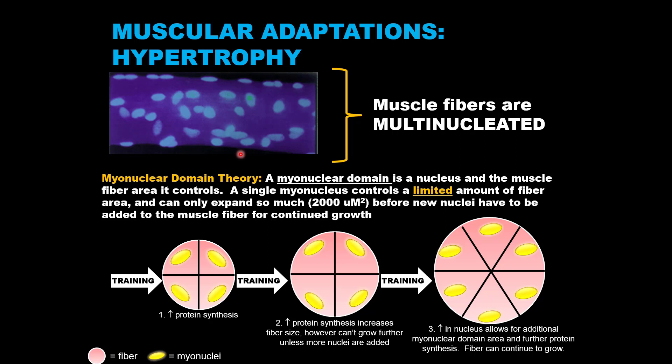One of the reasons muscle fibers are multinucleated is that even at adulthood, new myonuclei can form. Myonucleogenesis as it relates to myofiber hypertrophy operates on the basis of the myonuclear domain theory. A myonuclear domain is a single nucleus of the muscle fiber and the area that it controls. This implies that a single myonucleus can only control a limited area, and the muscle fiber can only expand so much before new nuclei have to be added for continued hypertrophy.